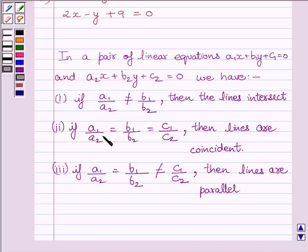If a₁ upon a₂ equals b₁ upon b₂ equals c₁ upon c₂, then lines are coincident. If a₁ upon a₂ equals b₁ upon b₂ but not equal to c₁ upon c₂, then lines are parallel.